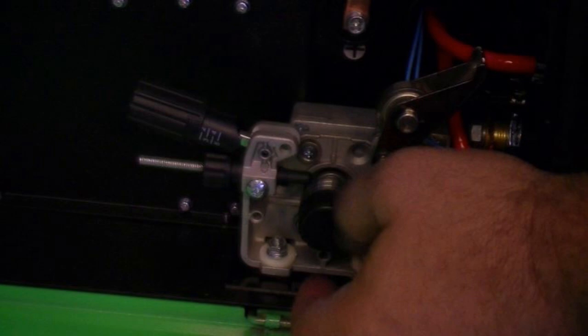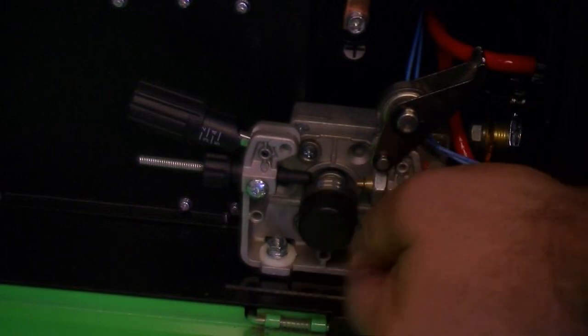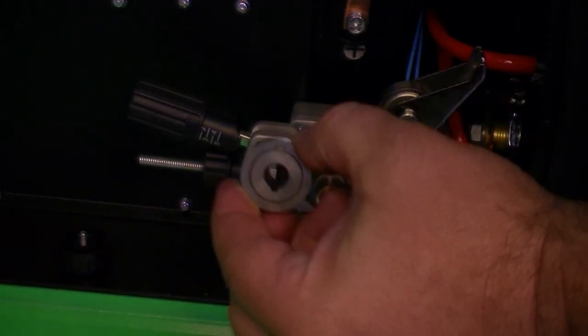Before installing the welding wire make sure the correct drive roll size is selected. Unscrew the thumb screw retaining the lower drive roller. Slide the lower roller off the shaft to identify the correct groove.